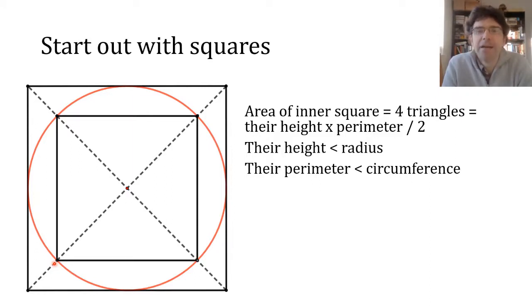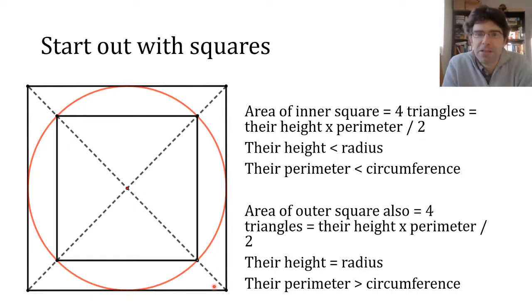In the outer square, the height of each quadrant, well this time it's equal to the radius, but the perimeter this time is greater than the circumference, so the area is going to be more than T.